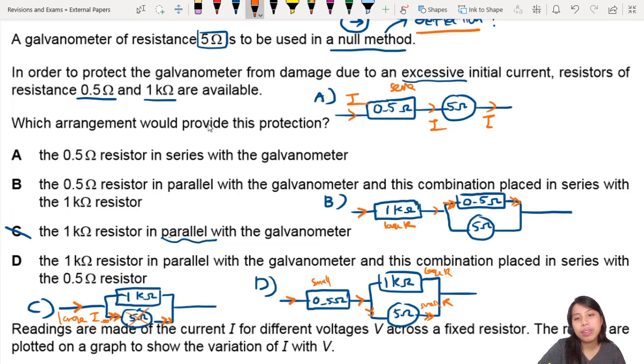Because it's a much smaller resistance. So actually, between all these, they kind of seem correct except for C. But B is the best choice. Wow, this is a tricky question, and it's only question 3. So this is how you can think of these galvanometer possible setups.